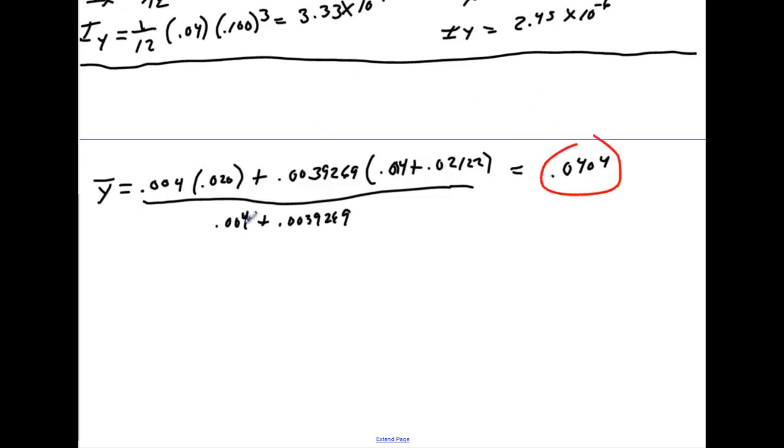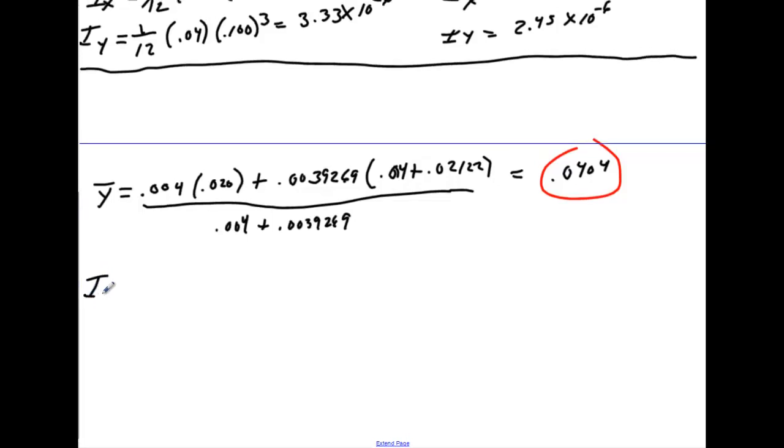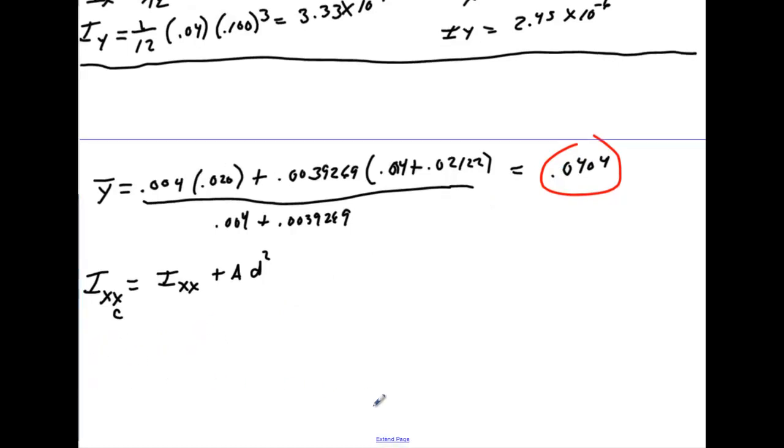Now to find the moment of inertia, we'll do Ixx about the centroid. You must do Ixx of each part about its own centroid plus its area times the distance squared. The distance is from this centroid to this centroid squared. I would break this up individually.